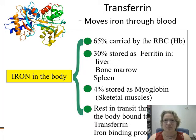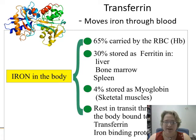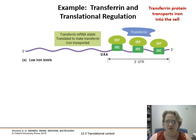Let's introduce another player: transferrin. This is a movement protein — it grabs iron and moves it through the blood, as opposed to storing it. About 65% of iron is carried in red blood cells wrapped up in hemoglobin, about 30% is stored in ferritin in the liver, bone marrow, and spleen, some is stored in skeletal muscles, and the rest is carried around bound to transferrin. Transferrin is really important for direct access of iron into cells.